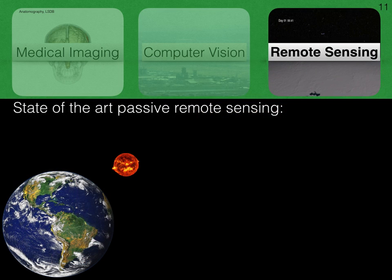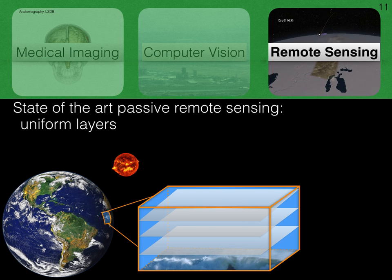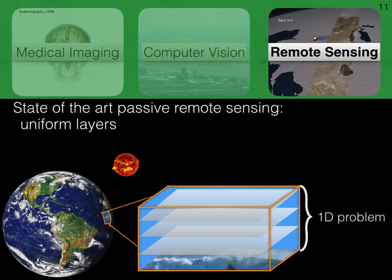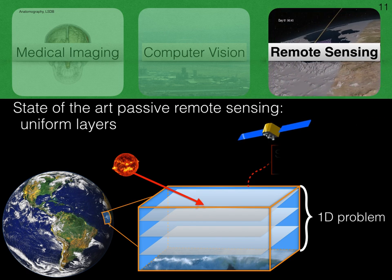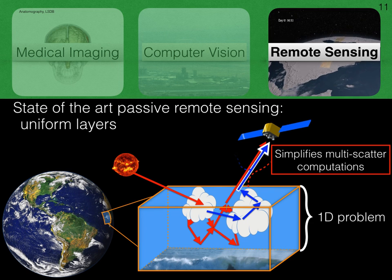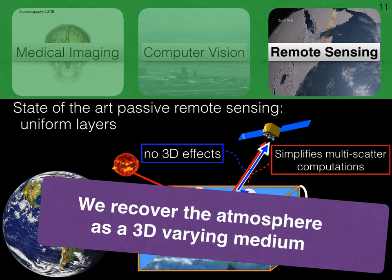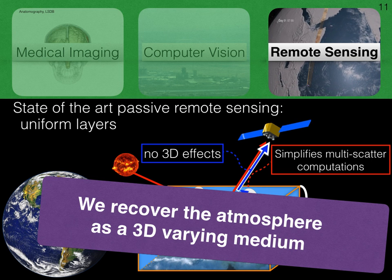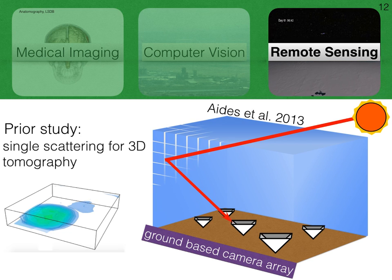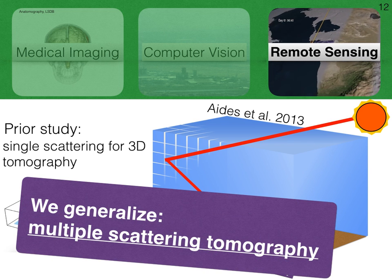What is done in state-of-the-art remote sensing? There, the atmosphere is assumed to be made of uniform layers, resulting in a 1D problem. This model simplifies multiple scattering computations, however anyone who looks up to the sky can see that this is inaccurate, since the atmosphere is actually three-dimensional. We recover the atmosphere as it should be: a 3D volumetric distribution. One prior study did consider a 3D medium, assuming single scattering to perform tomography. We generalize this notion to multiple scattering tomography.